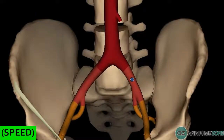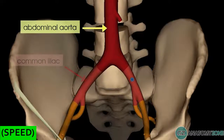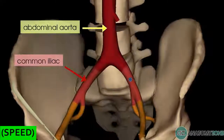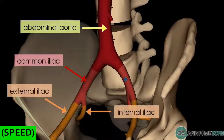Starting at the abdominal aorta, the abdominal aorta splits into common iliac arteries, so you've got a right and a left common iliac artery. The common iliac arteries then divide into the internal and external branches, so you've got a right and left internal and external iliac artery.